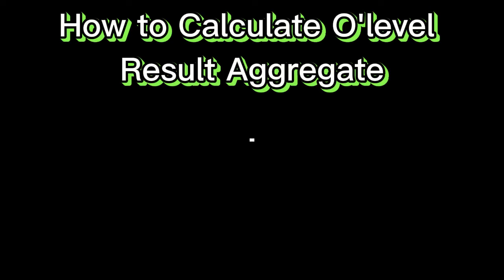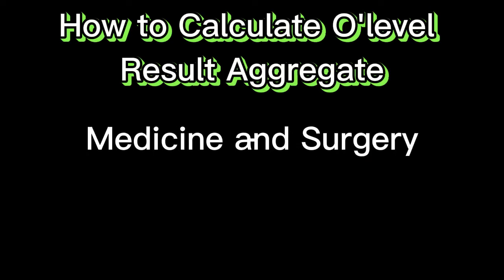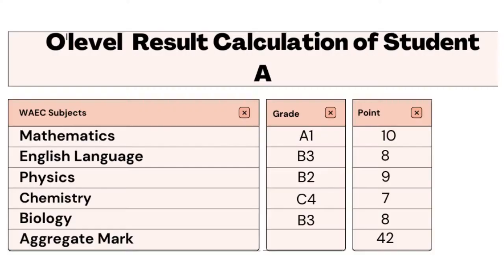Let's assume we have a student who wants to study Medicine and Surgery. The Joint Admission and Matriculation Board will require such a student to have credits or above in five good courses including Mathematics and English. Let's assume we have Student A, who scored Mathematics A1, English B3, Physics B2, Chemistry C4, and Biology B3. These are the five core subjects this student needs to have five credits in to study Medicine and Surgery.